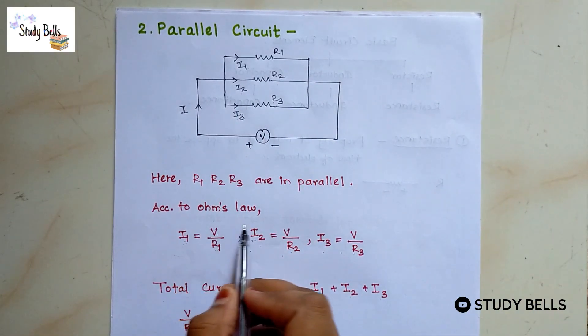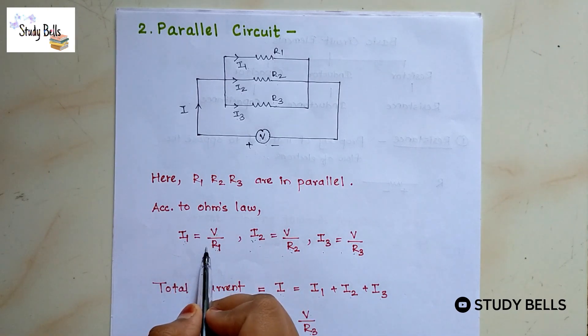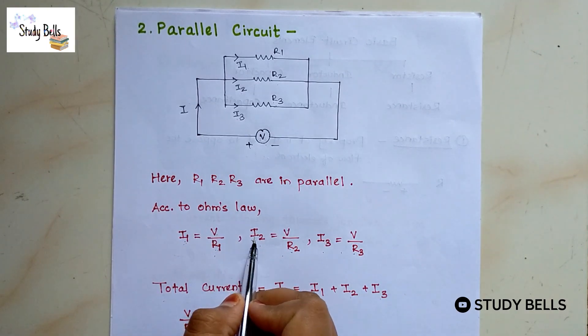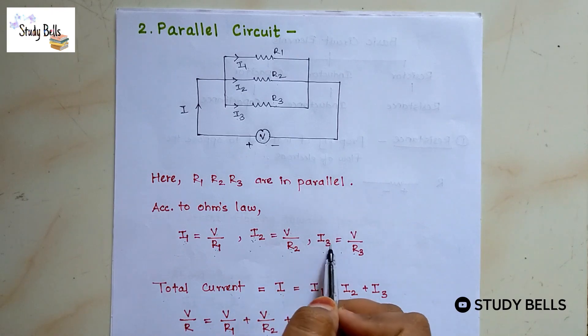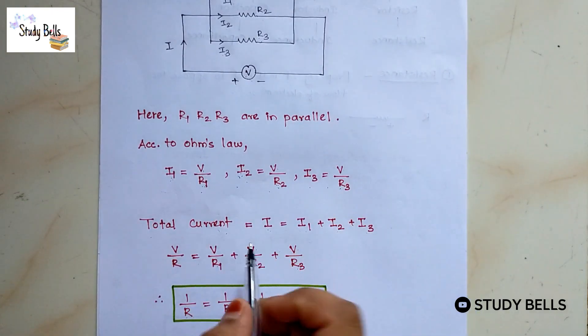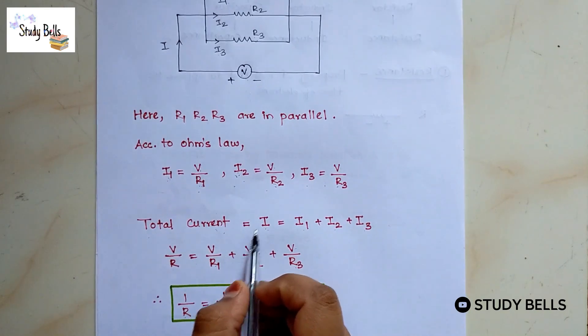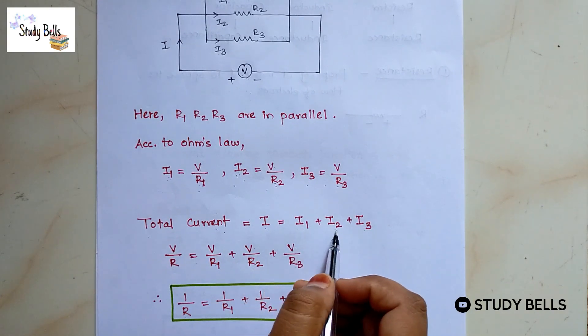Now again according to Ohm's law I1 equals V by R1, I2 equals V by R2, I3 equals V by R3. So total current can be given by I equals I1 plus I2 plus I3.